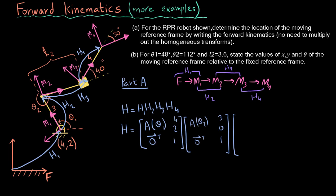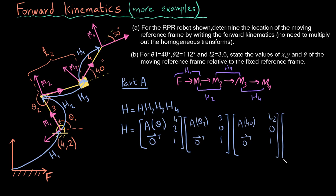H3 is M3 with respect to M2. The rotation here is 40 degrees, zero transpose, and the displacement is [a2, 0, 1] in x and y.